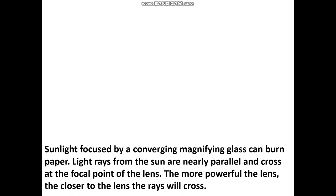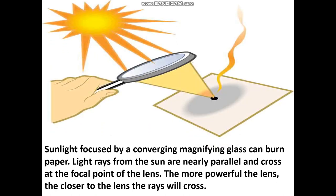The more powerful the lens, the closer to the lens the rays will cross. Here you can see how a lens is used for burning paper. Parallel rays from the sun come, pass through the lens, converge at a point, and when a paper is placed there, it will get burned.